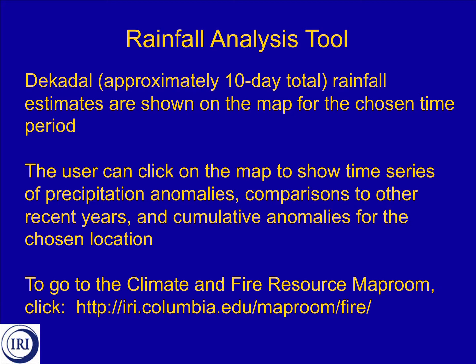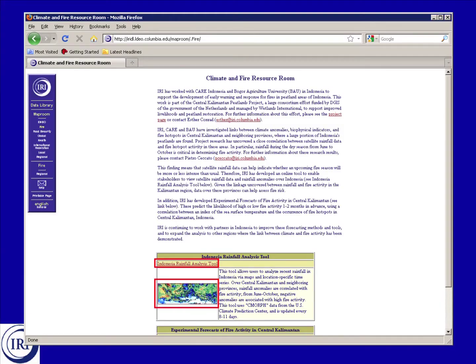To go to the Climate and Fire Resource Map Room, click on the URL shown here. When you do, you'll be given a page that gives a short description of the Climate and Fire Resource Map Room. Further down the page, you'll see a link to the Indonesia Rainfall Analysis Tool. Just click on that link or icon below it to go to the tool.